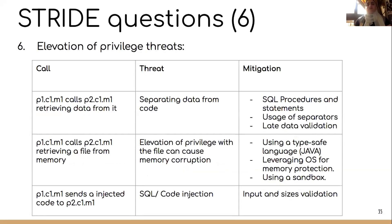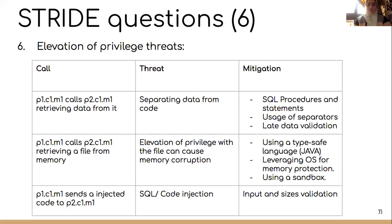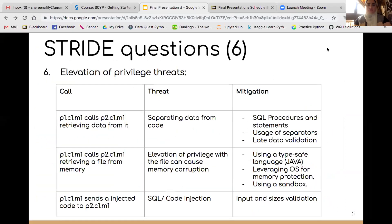The last STRIDE threat is elevation of privilege, which happens when a program or user is technically able to do things they are not supposed to do. This occurs when a method from a class in one package calls another method from another package retrieving data from it, and the threat is that data gets separated from the code.